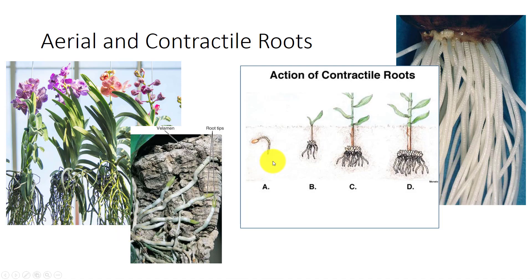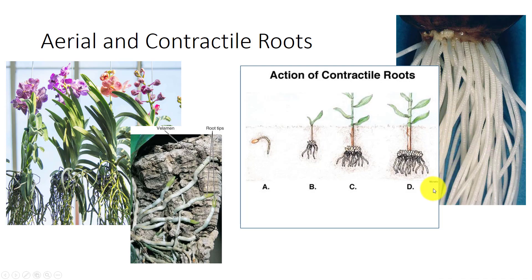In oxalis, gladiolus, crinum, and other plants with bulbs, roots undergo even more contraction than prop roots do. After extending through the soil and becoming firmly anchored, the uppermost portions slowly contract, burying the bulb further down. Contractile roots are important for stability and depth control. Root contraction may be important in anchoring newly germinated seeds, and bulbs and corms use contractile roots to change their depth in the soil.